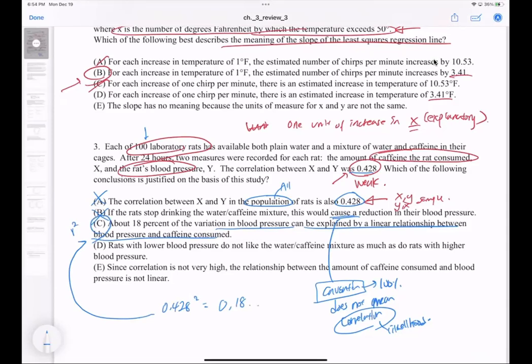D says rats with lower blood pressure do not like the water-caffeine as much - what are they talking about? We're just trying to see the relationship between blood pressure and caffeine consumed, not how much the rat likes drinking it. E says since correlation is not very high, the relationship is not linear. The linear format has nothing to do with the correlation coefficient. It has to do with how the data points are with one another - are they curved? Form doesn't go hand in hand with r.